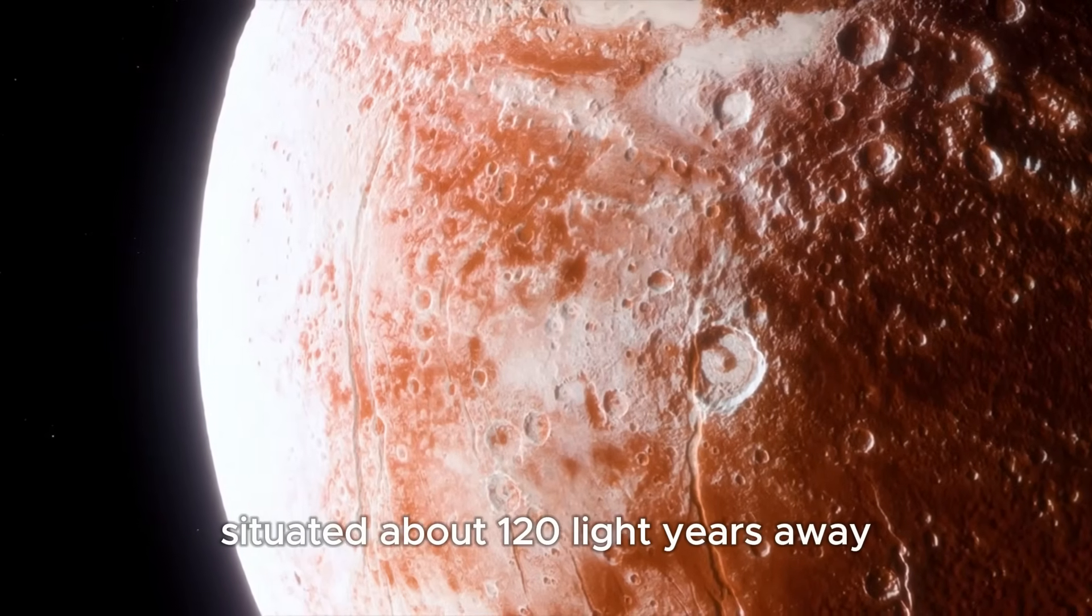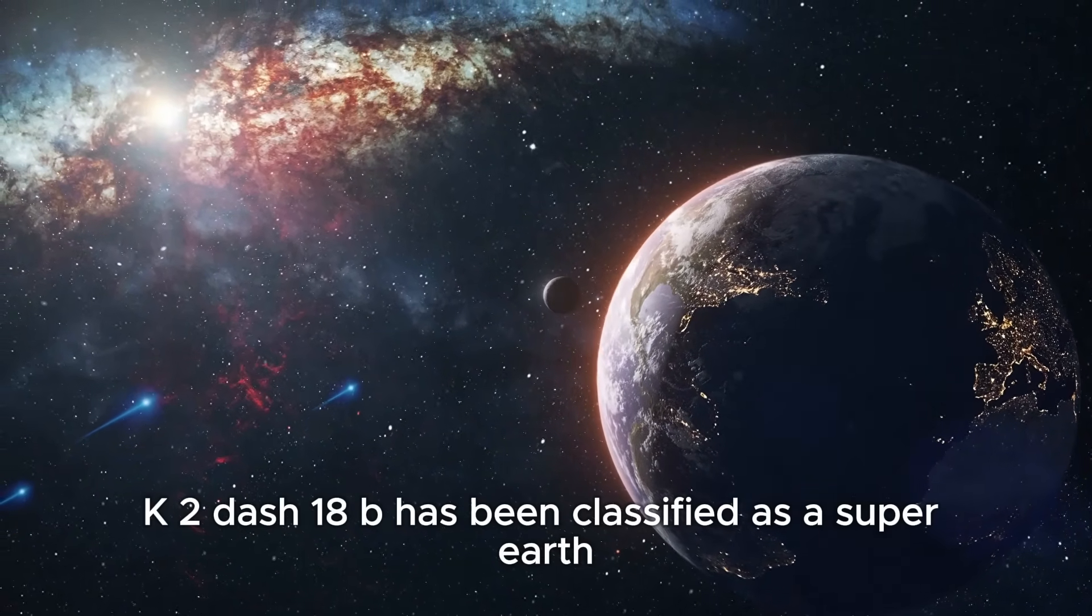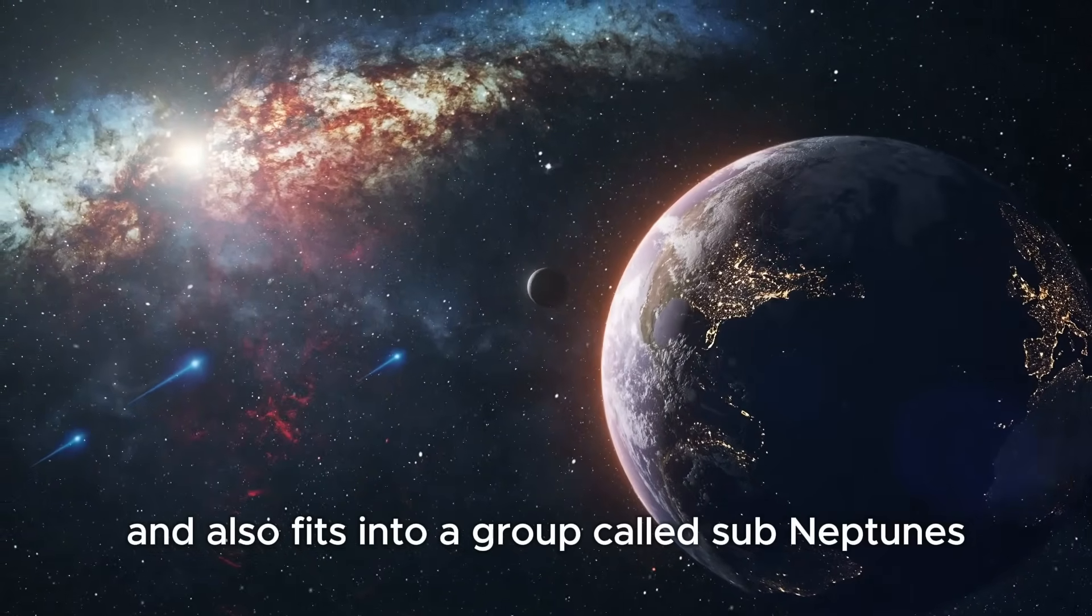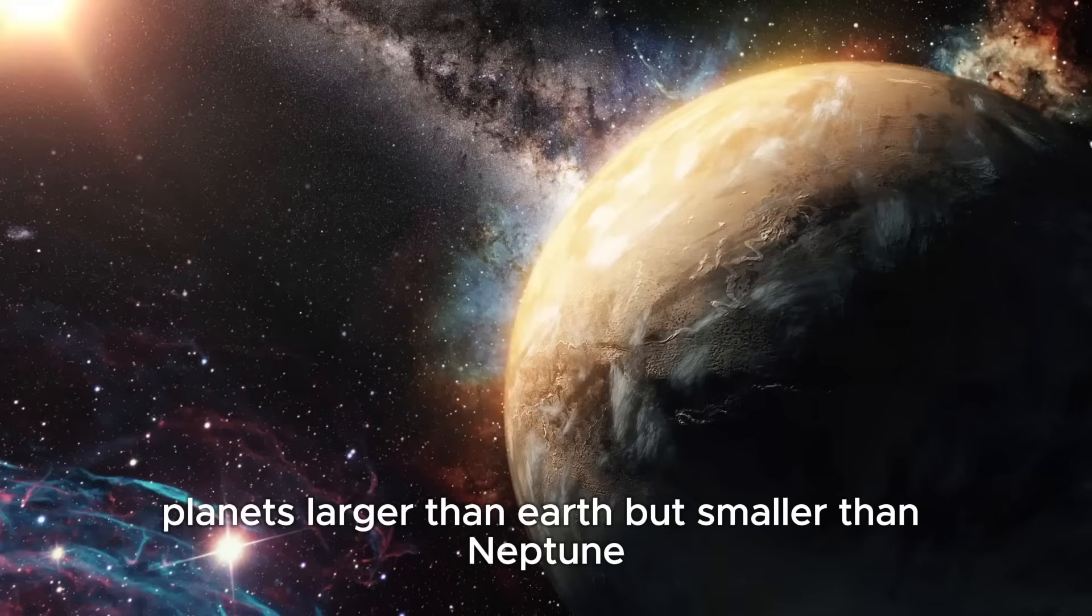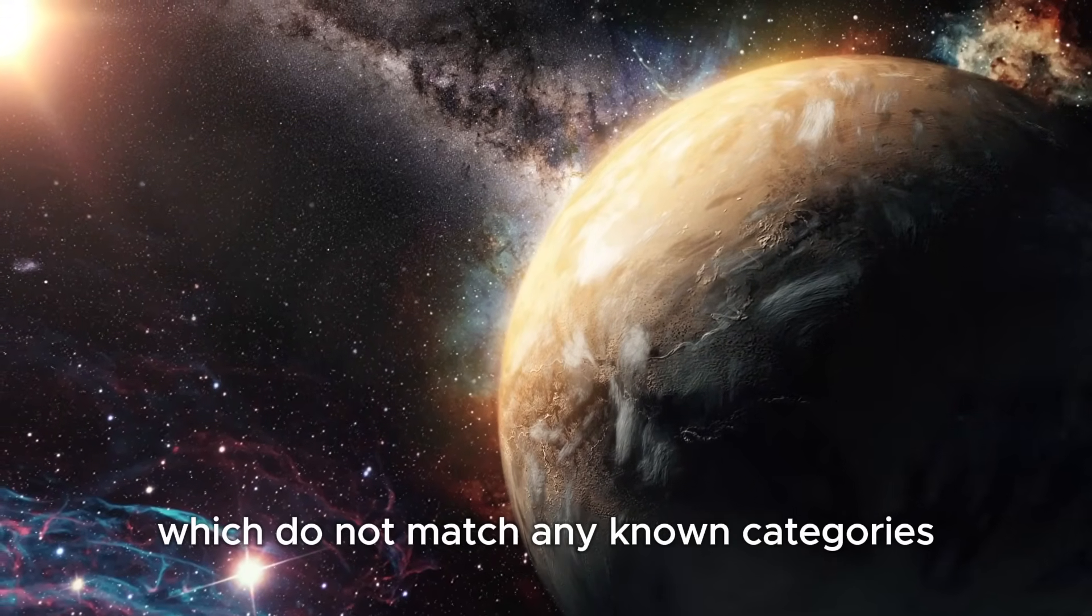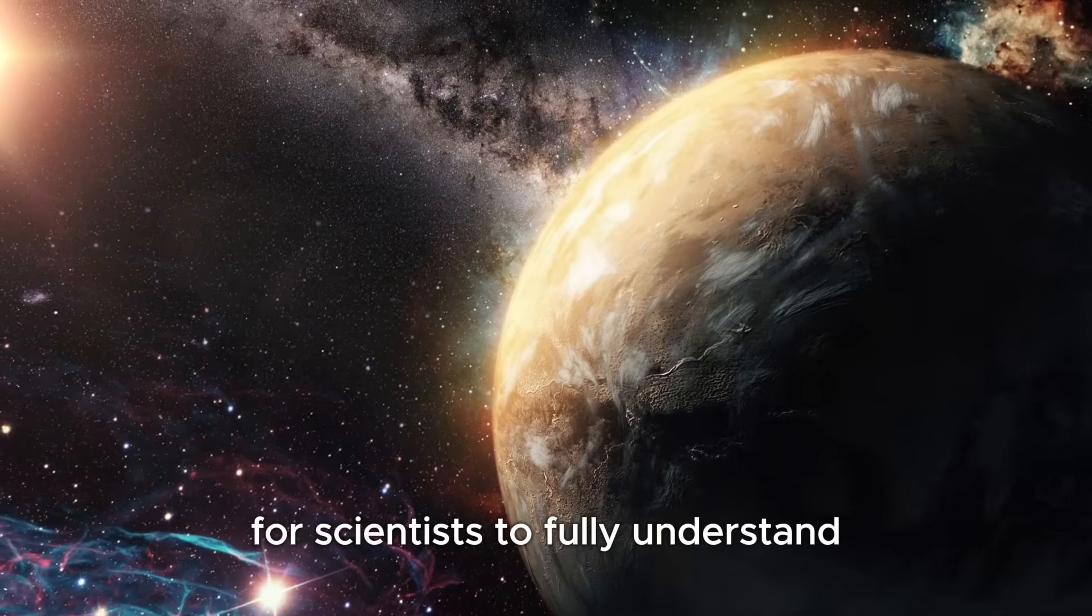Situated about 120 light-years away, K2-18b has been classified as a super-Earth and also fits into a group called sub-Neptunes, planets larger than Earth but smaller than Neptune, which do not match any known categories in our solar system. This makes them difficult for scientists to fully understand.